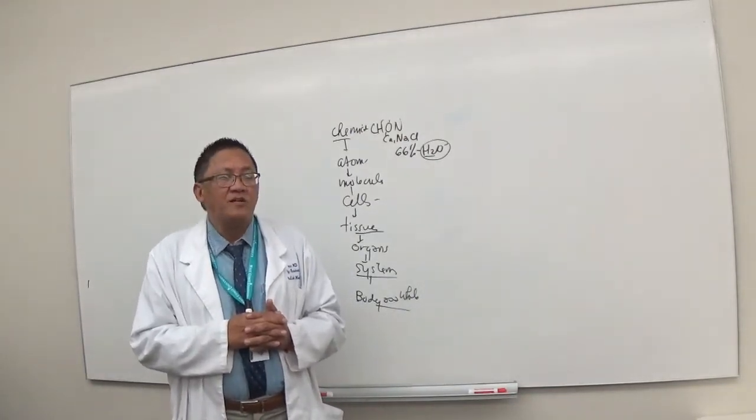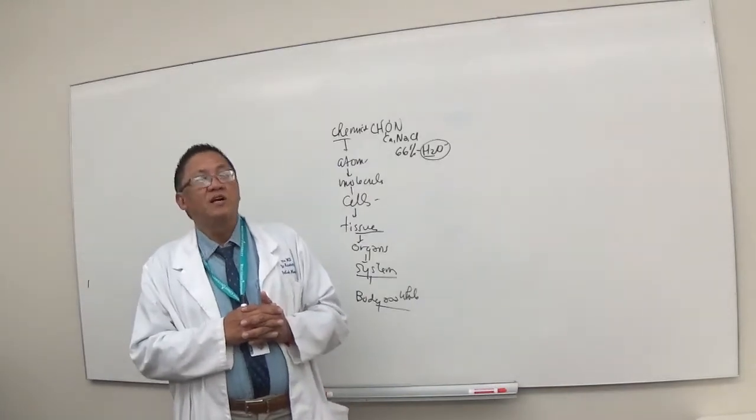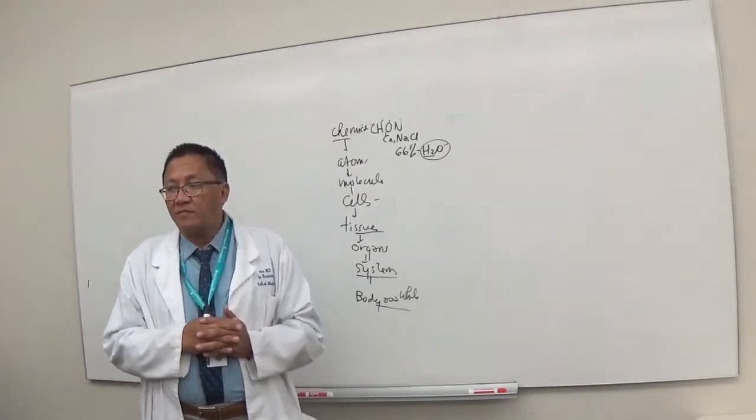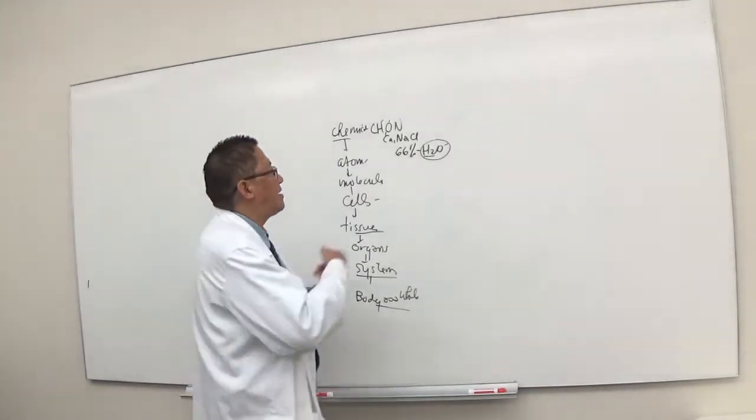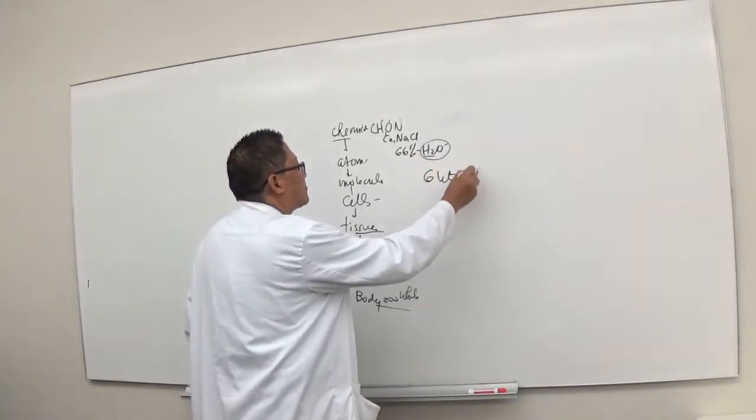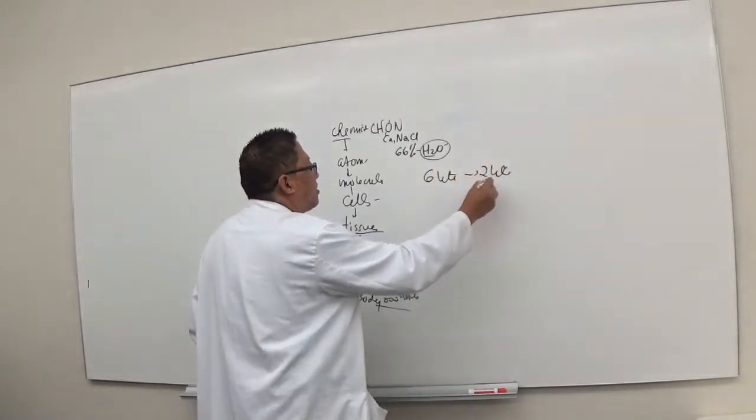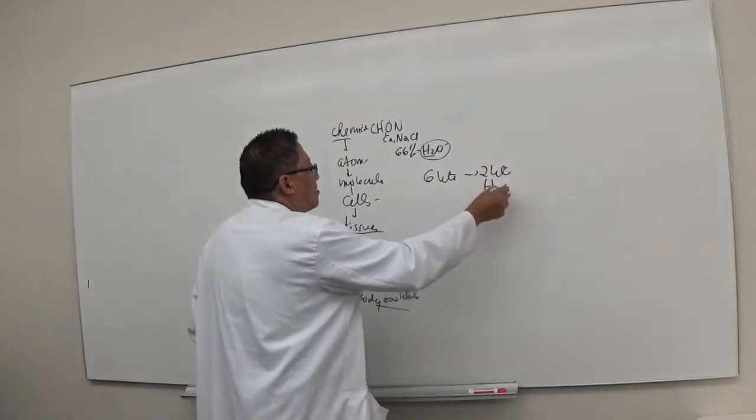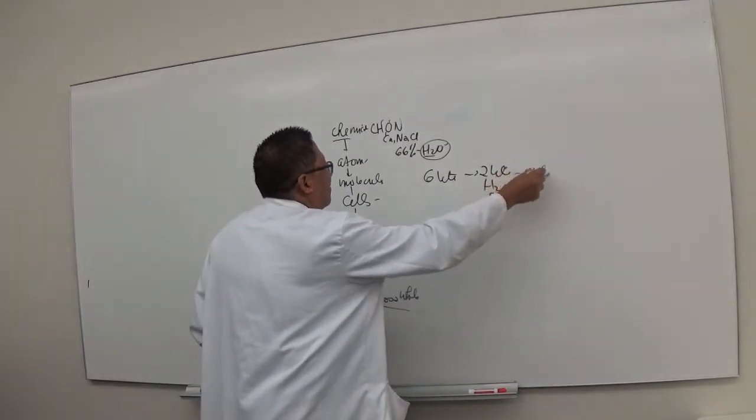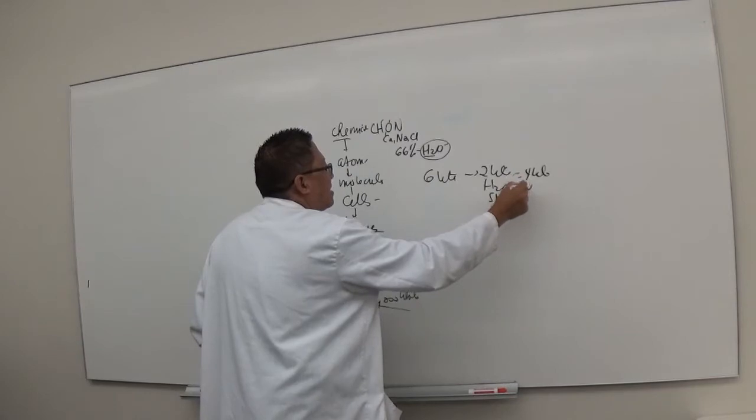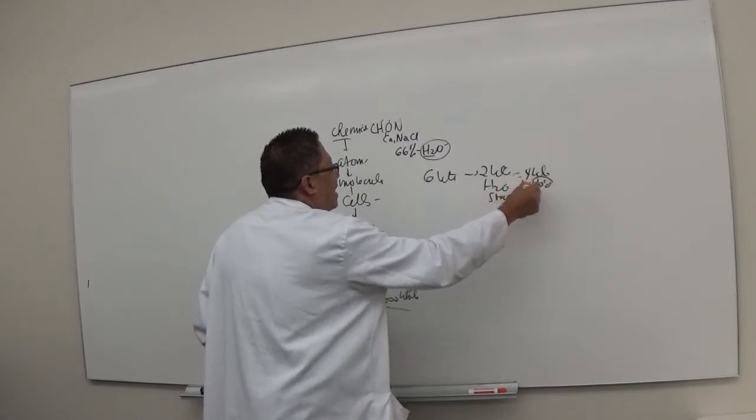So we make an approximation, very gross approximation. If you lose two liters, six minus two will give you what? Four liters. So six liters of blood minus two liters of water in the stool, you end up with four liters of blood in the body. This blood is water.